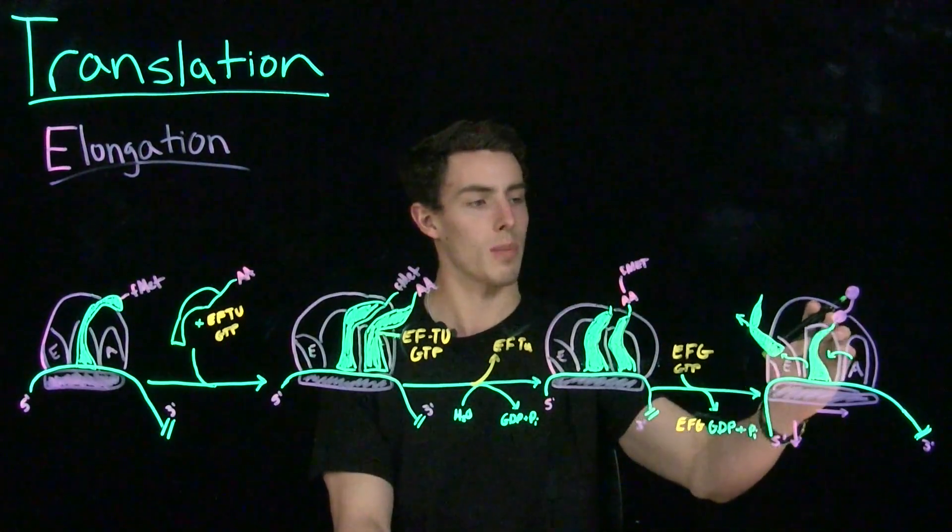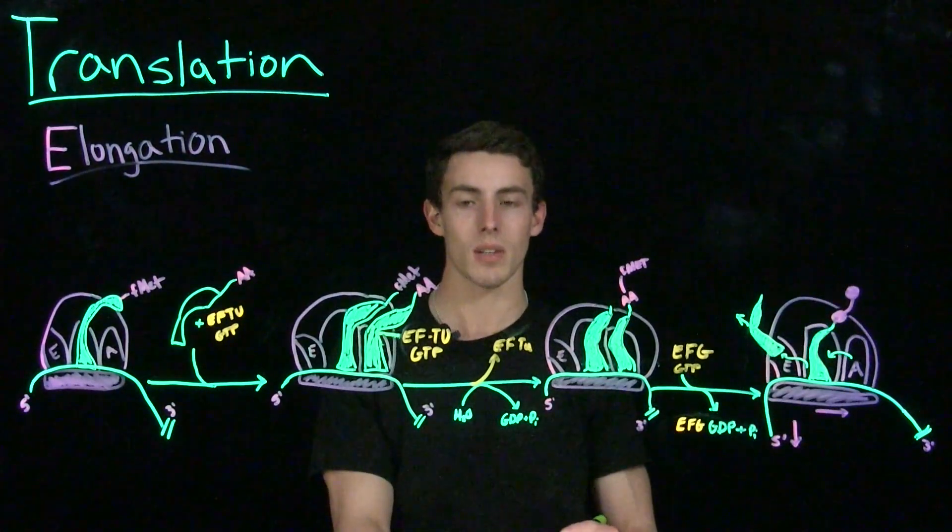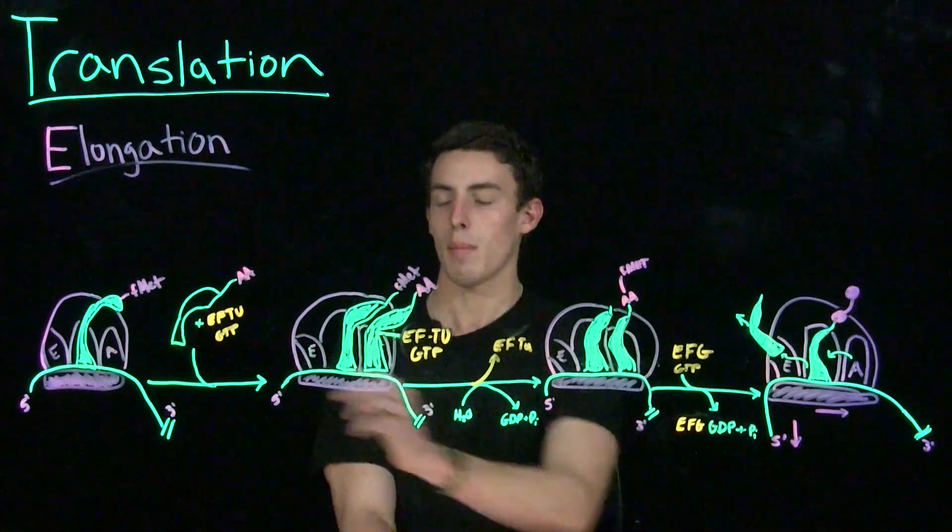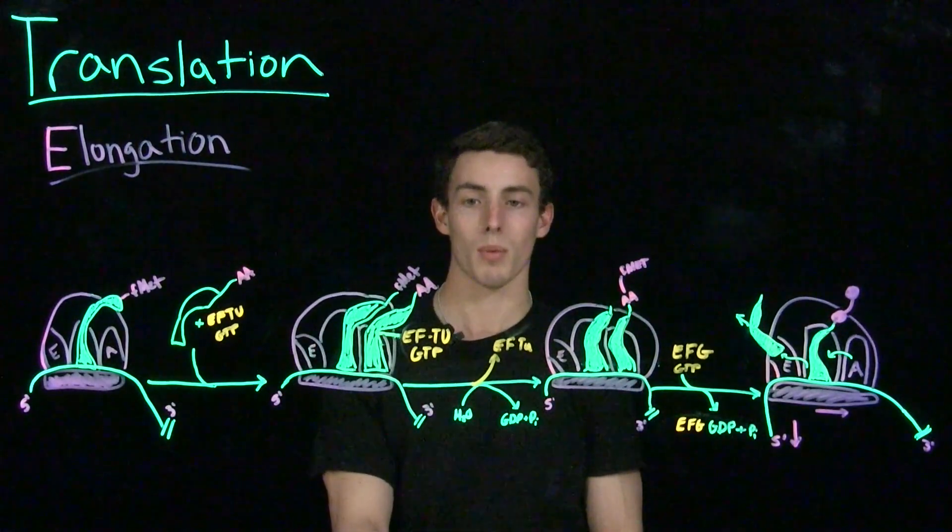We're actually going to end just like we started, with a tRNA with amino acids on the acceptor arm in the P site. So we can continue elongation over and over, based off of these same steps, until we reach a nonsense codon. And remember, when we reach a nonsense codon, that's when we start termination.